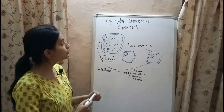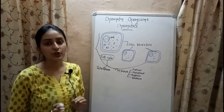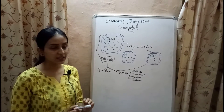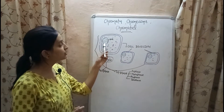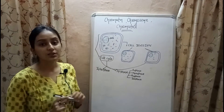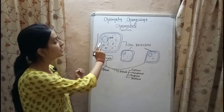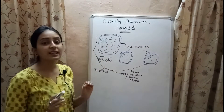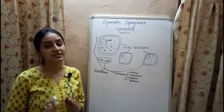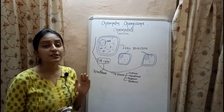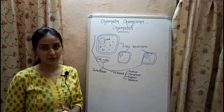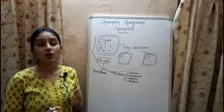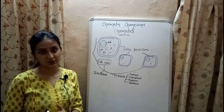As we all know, the cell is the fundamental unit of life. It contains an oval or spherical structure known as the nucleus. This nucleus contains a double helical structure called DNA, which carries the genetic information of the cell. DNA is known as the blueprint of life because it is responsible for the survival, growth, and reproduction of organisms.